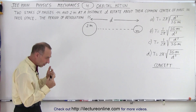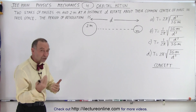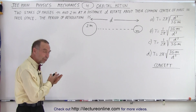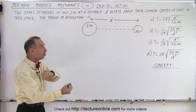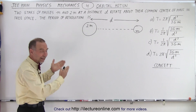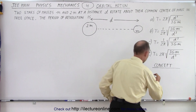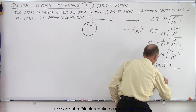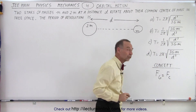The concept is that whenever we have orbital motion or any circular motion, the centripetal force must equal the force that causes that motion to exist. In this case, it's the force of gravity. So the concept here is that the force of gravity must equal the centripetal force.